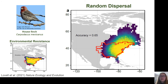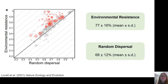For the house finch, overlap was only 65% for the null model, compared to 83% under environmental resistance. This was similar across all species. On the graph, the Y-axis is the predictive accuracy of the environmental resistance model and the X-axis is the predictive accuracy of the random dispersal model, with each point representing a species and point size proportional to range size. On average across all species, the random dispersal model predicted ranges with an accuracy of 68%, which was significantly worse than the environmental resistance model.